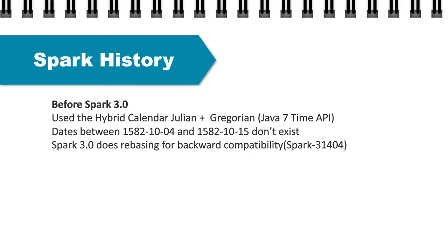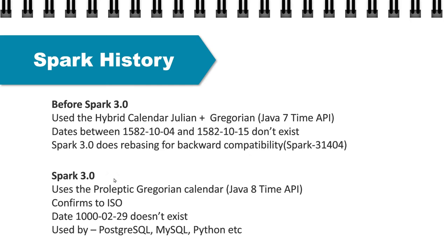Spark 3.0 does a rebasing or backward compatibility. When Spark 3.0 came in, it had a different calendar — and that's why backward compatibility had to be supported. With Spark 3.0, we are using the Proleptic Gregorian calendar, which is a single calendar that can support all dates and years. There is also a change in API — we are now operating on the Java 8 time API, which conforms to ISO. The only limitation is one single date that does not exist: 29th of February 1000, because according to Proleptic Gregorian that's not a leap year. But this is now the standard used across the industry by PostgreSQL, MySQL, and Python.